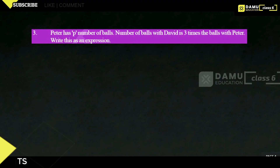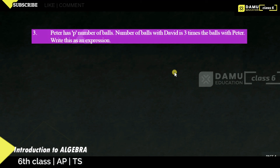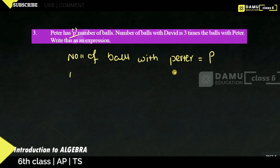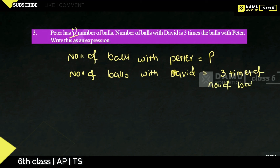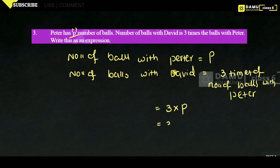The third question: Peter has P number of balls, and David has 3 times the balls with Peter. Let the number of balls with Peter equal P. The number of balls with David equals 3 times P, that is 3P. Let N be the number of balls with David; then N equals 3P.